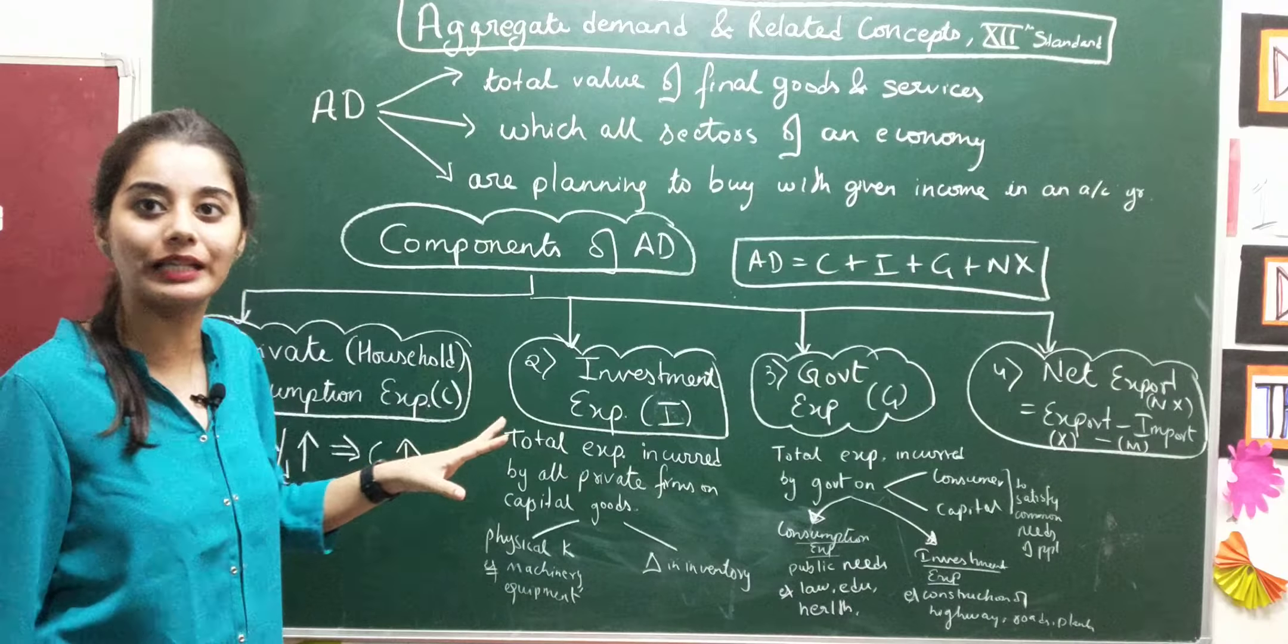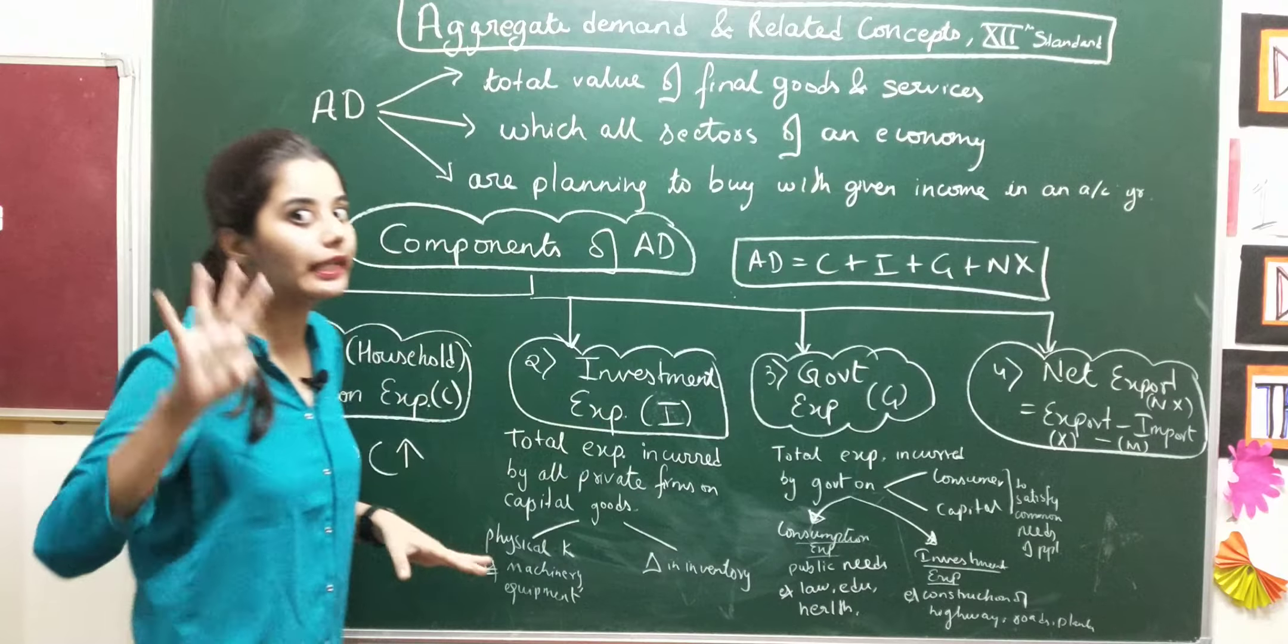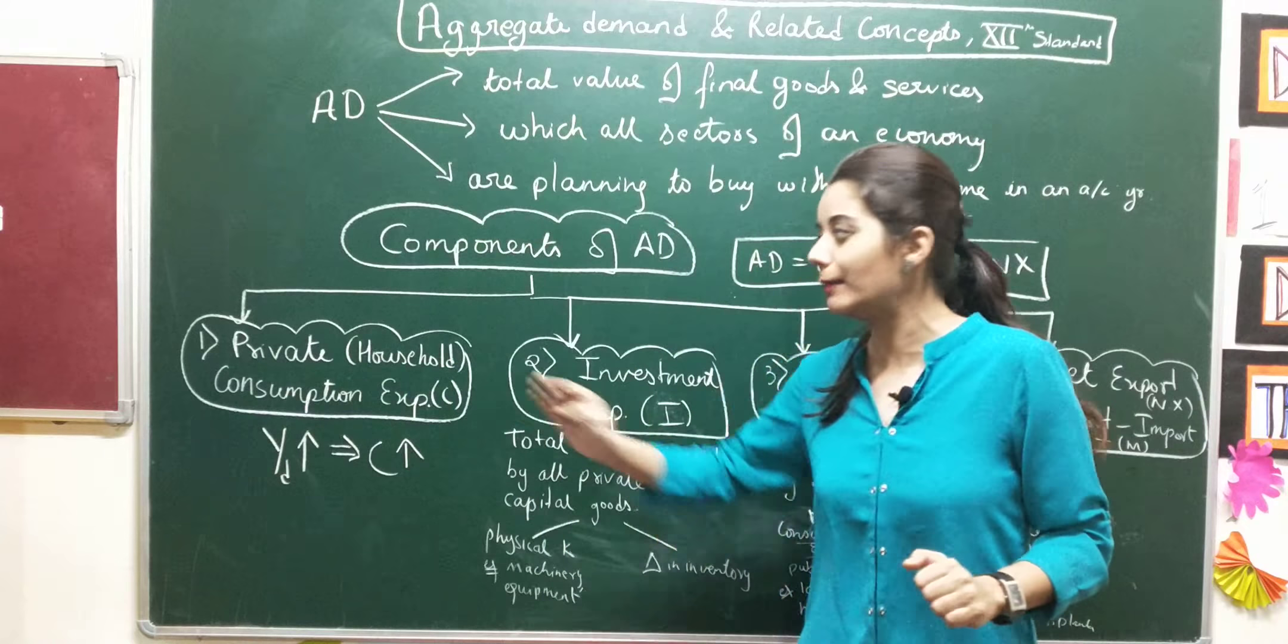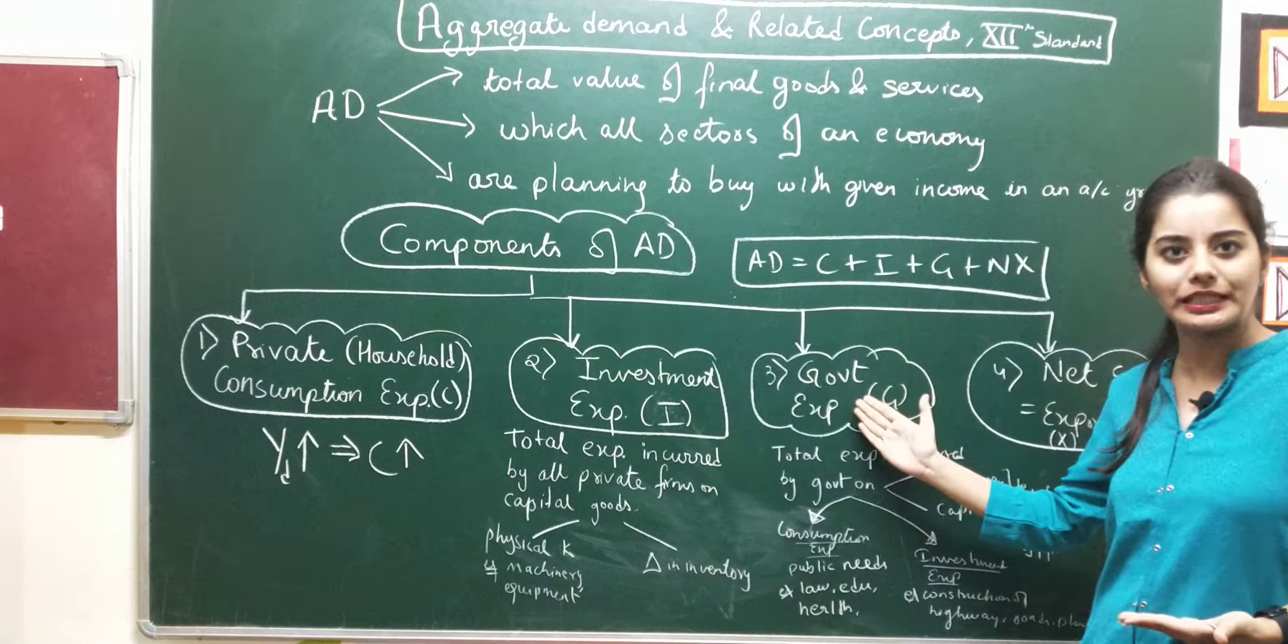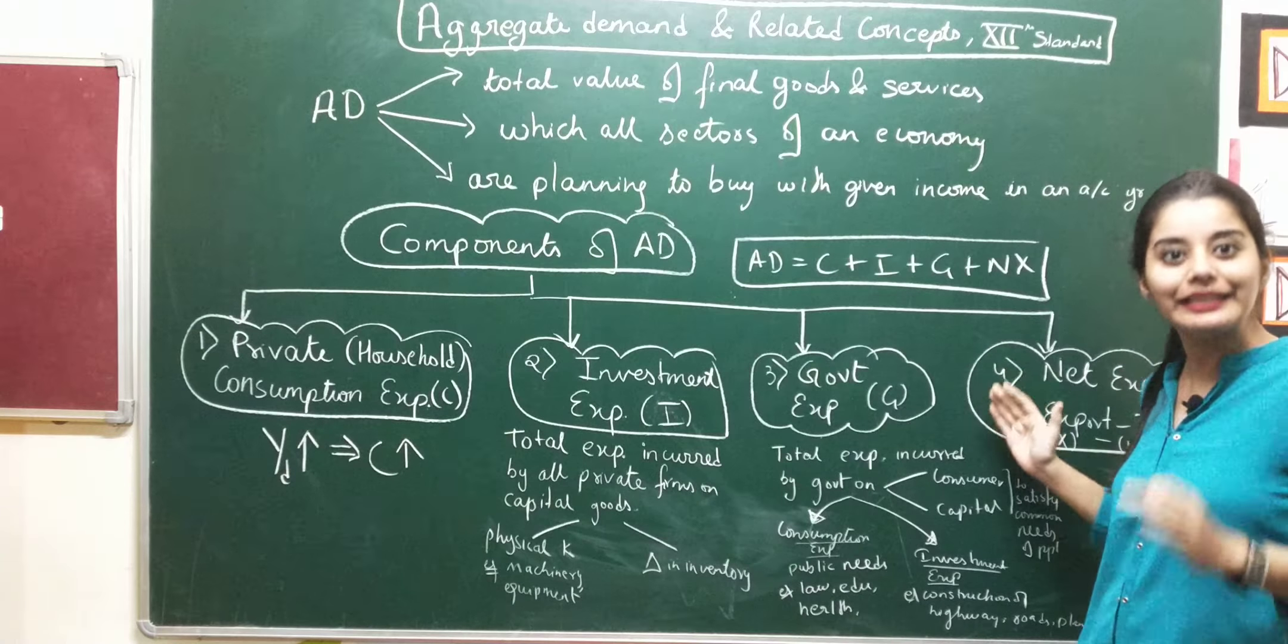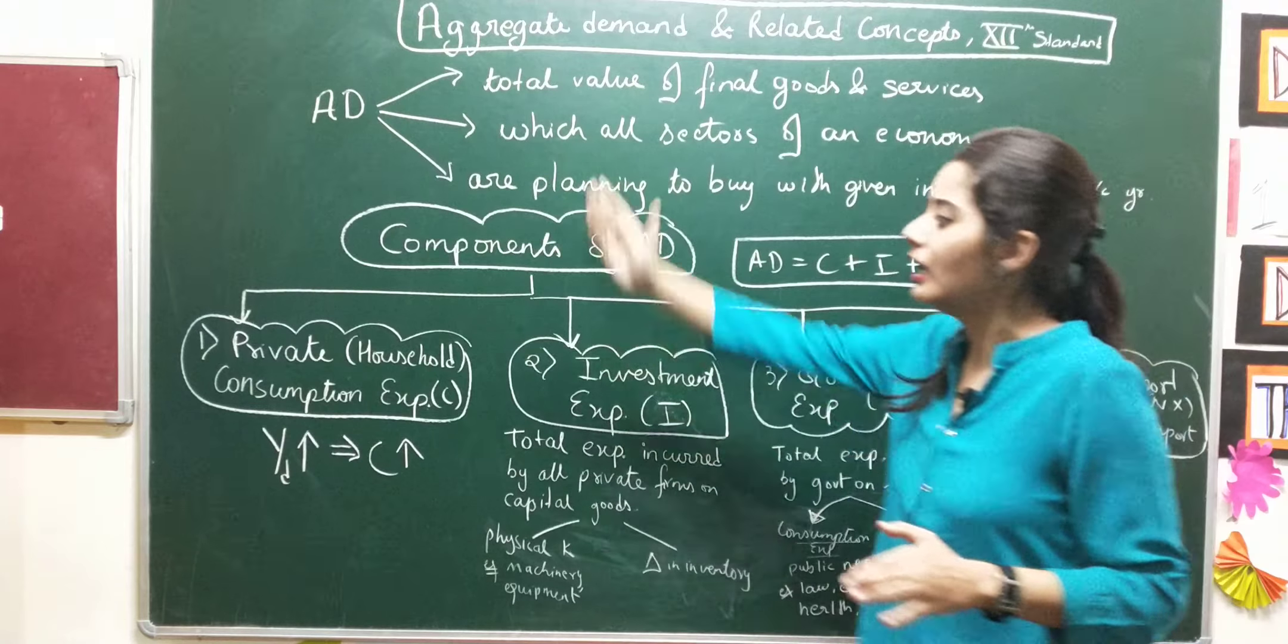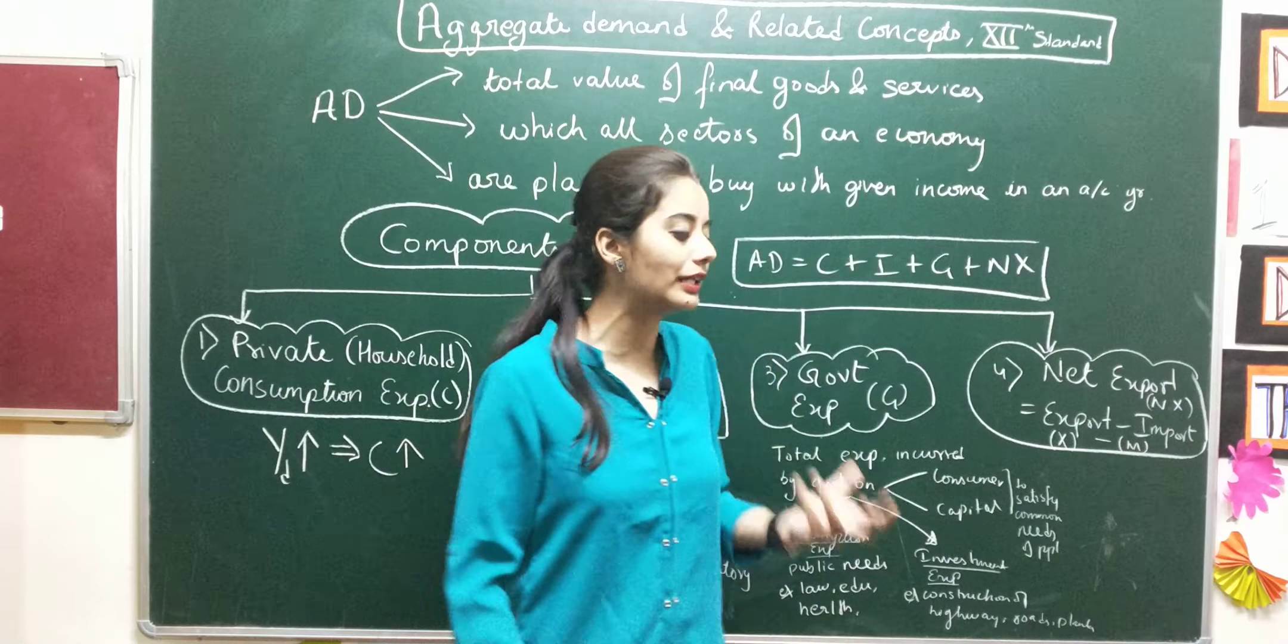if we talk about the components of aggregate demand, there are four components. The first is private final consumption expenditure, the second is investment expenditure, third is government expenditure, and fourth is net export. Class, now we will talk about private final consumption expenditure.